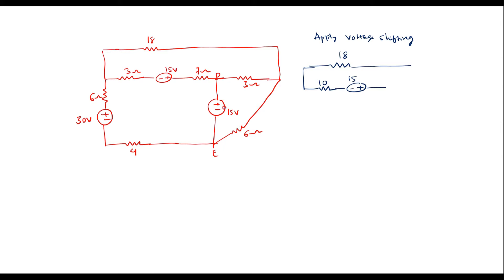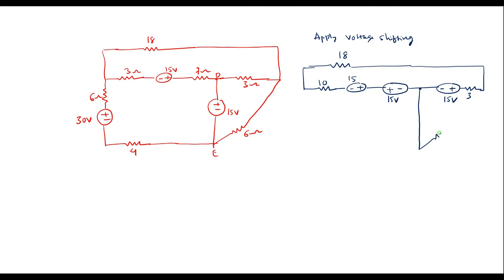Now to apply voltage shifting, I will connect this voltage source in between this branch and as well in between this branch. This is the voltage source — this end is positive, this end is negative. On this side also: this end is negative, this end is positive. This is how we apply voltage shifting — the negative terminal is grounded. The remaining 3 ohm is connected in series with this. The remaining 6 ohm is connected as it is. We can see that 6 and 4 are in series — I will replace them with 10 ohm. And we have a voltage source of 30 volt.